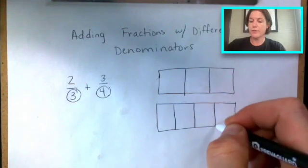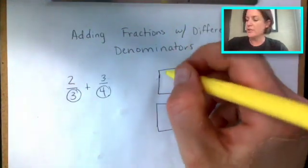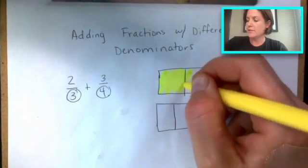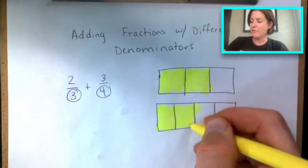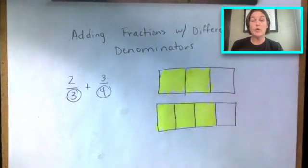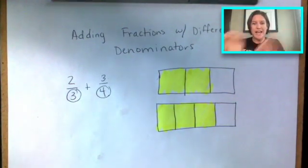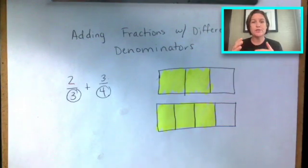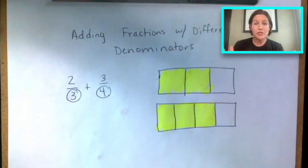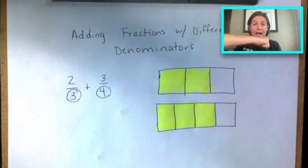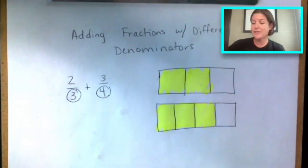The next one is three fourths. So let's break it into fourths. Let's shade in two. It describes the amount that is being considered. And then here we have three fourths. Now, because these are broken into different size pieces, we can't just add them together yet. They can be added, but we have to do some conversions with them. When you add or subtract, your denominators must match.